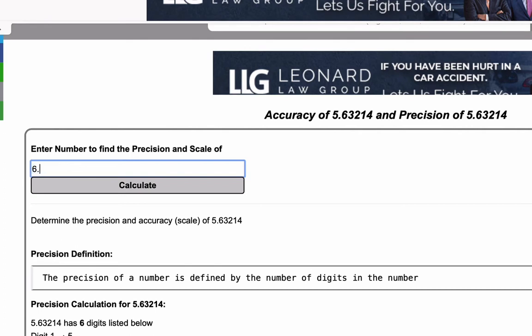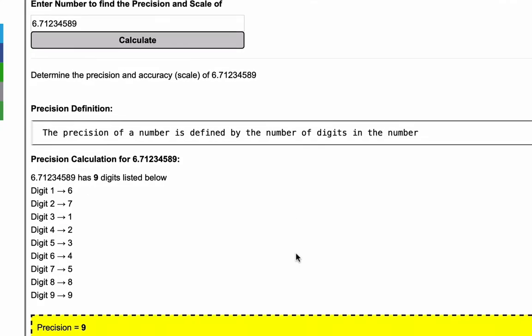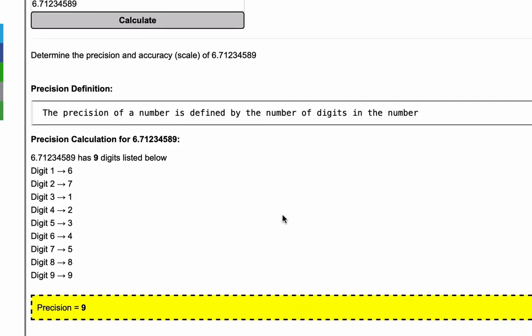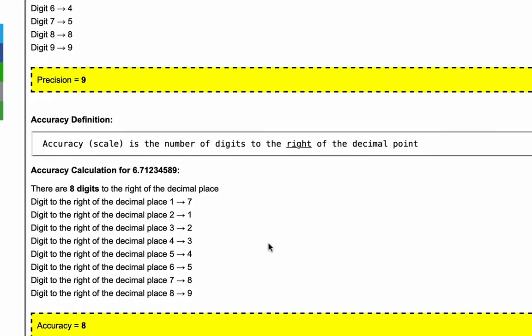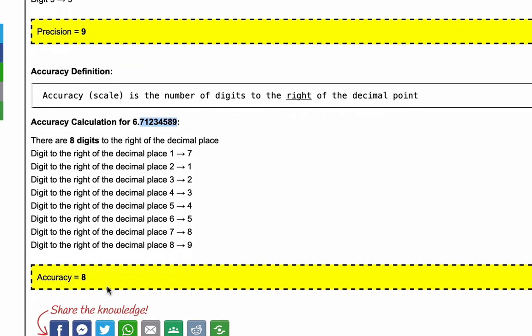Let's try one more number. 6.71234589. Let's extend the decimals out a little bit. Calculate and again we'll walk through our definition and our calculation. This number has nine digits so the precision is nine and accuracy is the number of digits to the right of the decimal point and as you can see there are eight digits to the right of the decimal place. Therefore the accuracy calculation is eight.